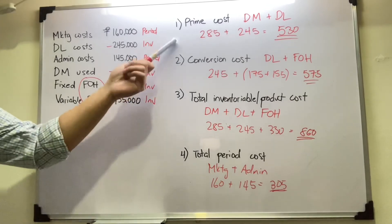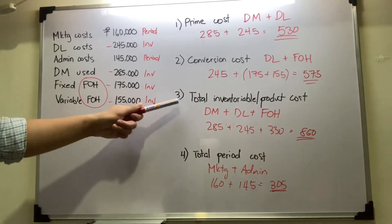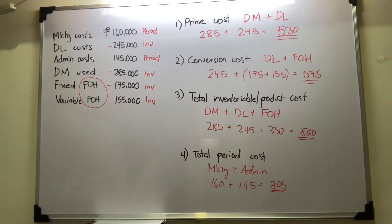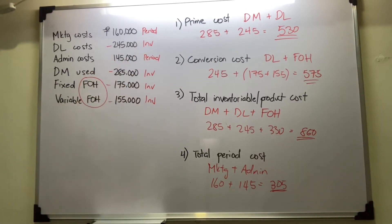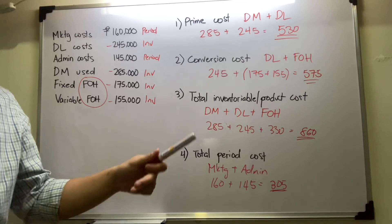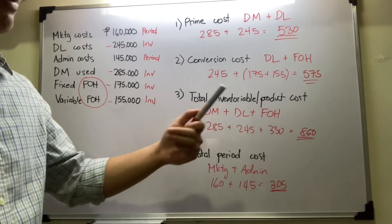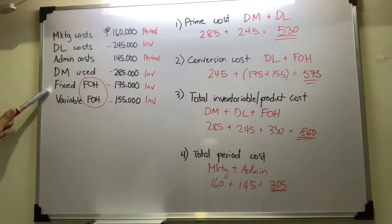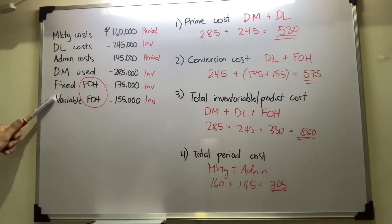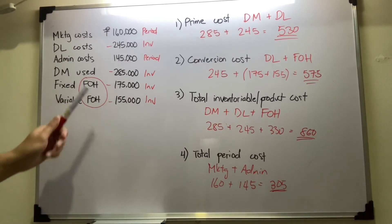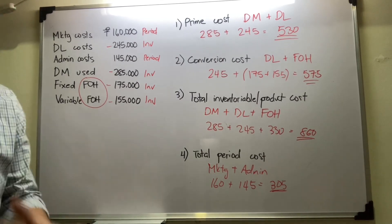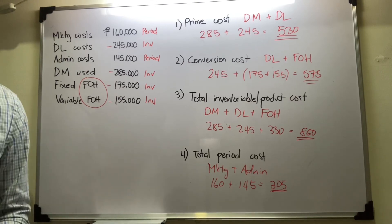Please don't make a mistake in determining inventoriable or product cost. The formula for product cost or inventoriable cost is direct materials plus direct labor plus factory overhead. Factory overhead includes both fixed and variable portions, and within factory overhead you include indirect materials, indirect labor, factory rent, and anything else related to producing the finished goods.